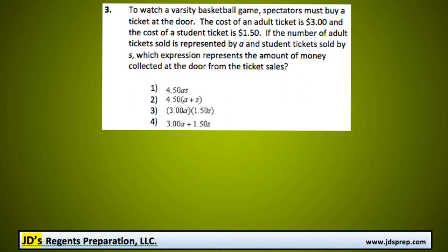This is problem number three from the August 2015 Algebra Regents Exam. To watch a varsity basketball game, spectators must buy a ticket at the door. The cost of an adult ticket is $3, and the cost of a student ticket is $1.50. If the number of adult tickets sold is represented by A, and the student tickets is S, which expression represents the amount of money collected at the door from the ticket sales?